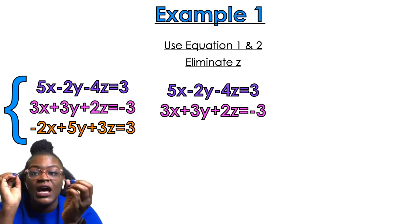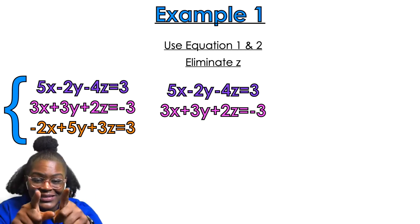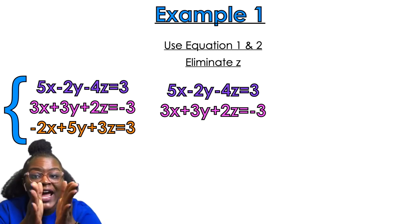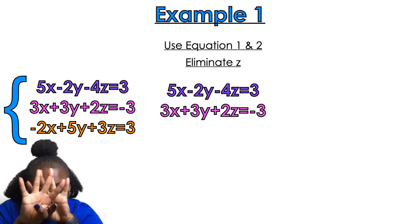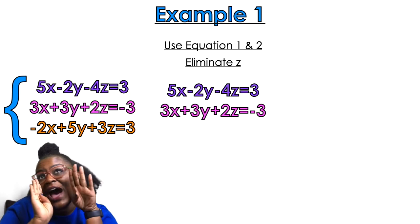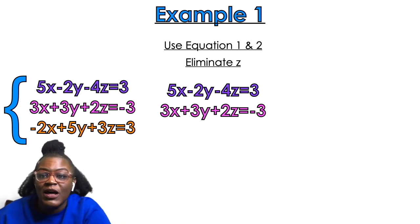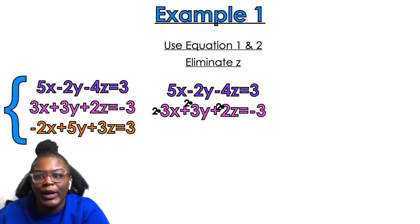So I'm going to need negative four, and I need to turn that two into a positive four. What would I do to the pink equation to make that two a positive four? Multiply by two — and remember, if I multiply one thing, I have to multiply all the things. So I multiply 3x by 2, 3y by 2, 2z by 2, and the 3 by 2.